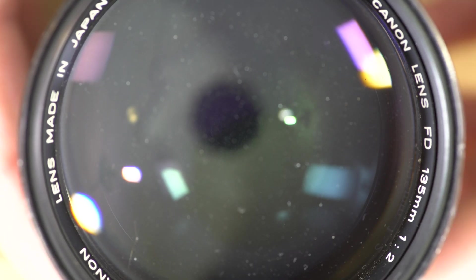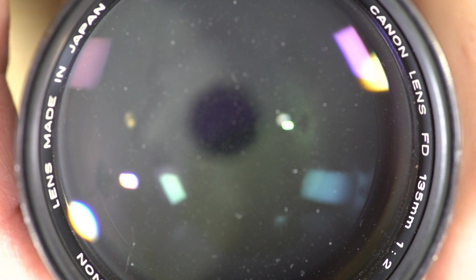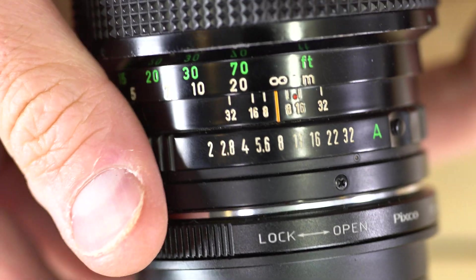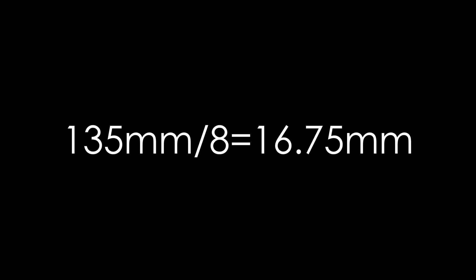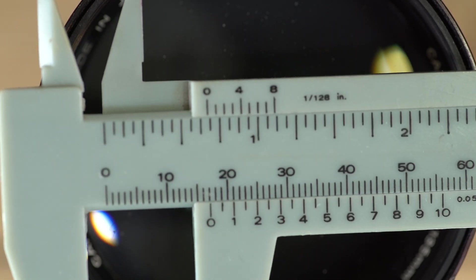The aperture diameter is measured from the entrance pupil — which is to say looking through the front of the lens — combined with the focal length, is what creates depth of field. To spoil the end of this video: crop factor has no influence on depth of field.